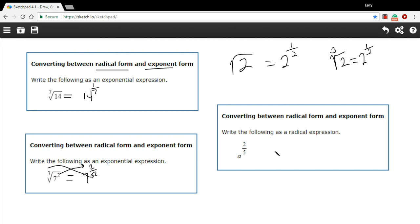So let's take a look at this one. This goes in the other direction. We have a to the two-fifths power, and we want to write that as a radical expression.